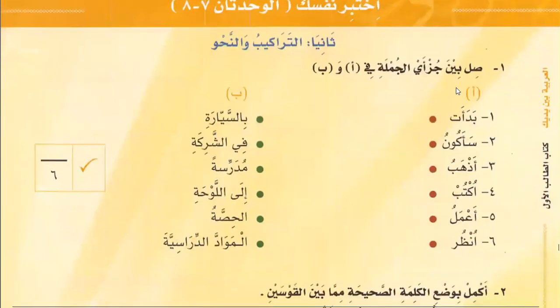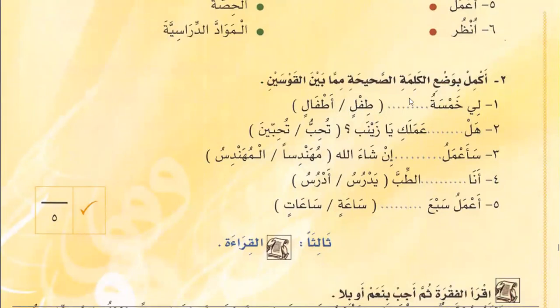Then put a cross mark on the different word. Then complete the sentences by using these words. Then you will join the columns. As I have told you, from three to ten we use the plural word, so with five you use atfaal. For female we use the feminine form. In this way you will fill these blanks.